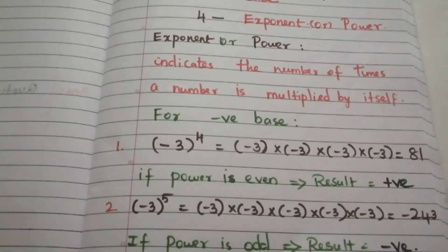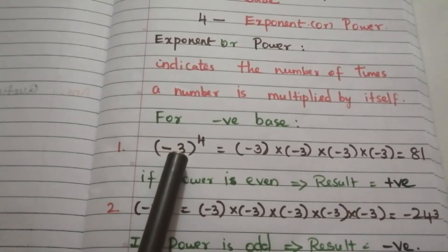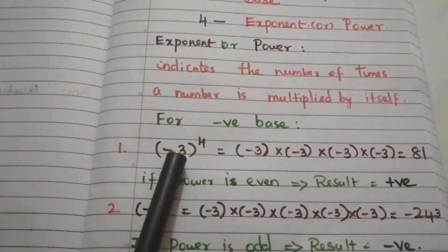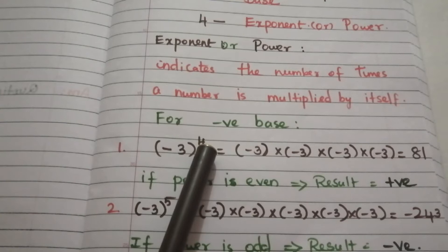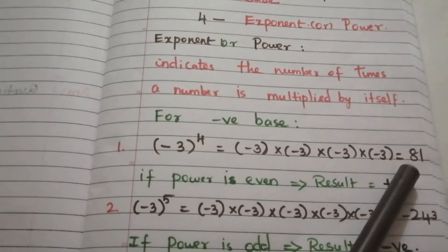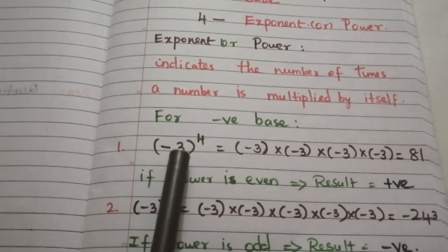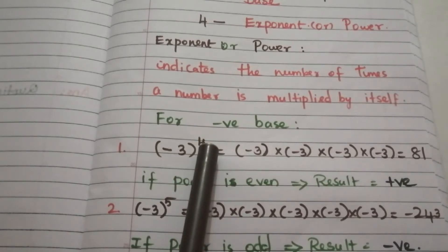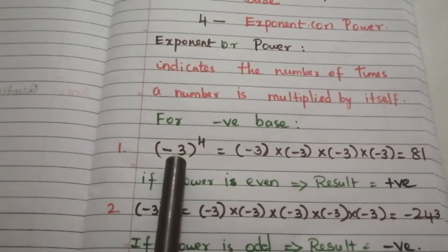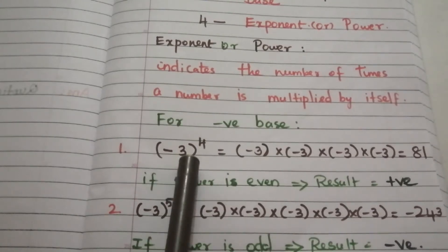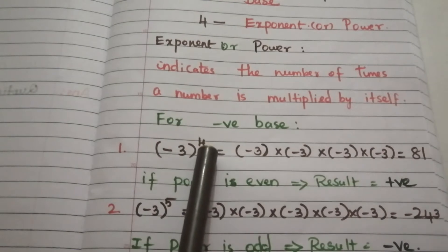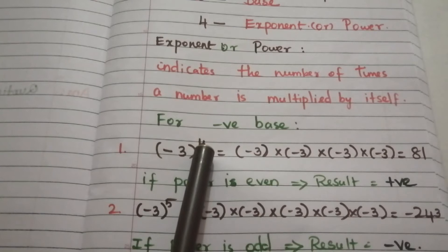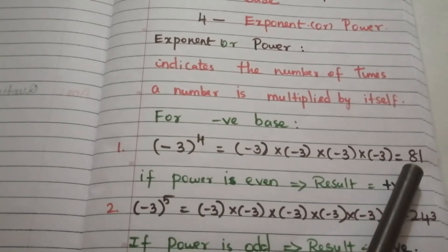Taking minus 3 power 4, that means minus 3 is multiplied 4 times, so the answer is 81. Here minus 3 is the base and 4 is the exponent. The base is a negative number and the exponent is an even number, so in that case the answer is positive.